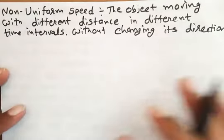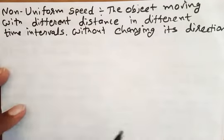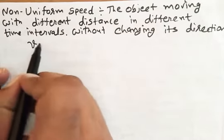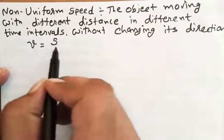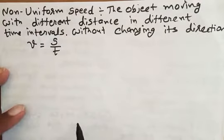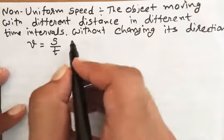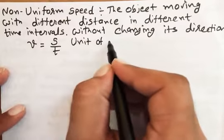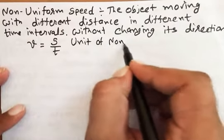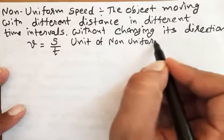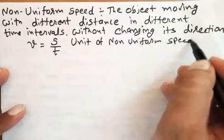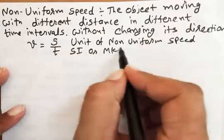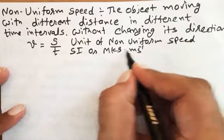The formula for non-uniform speed is the same: speed equals distance covered upon time interval. The unit of non-uniform speed in SI or MKS is metre per second inverse, and in CGS it is centimetre per second.